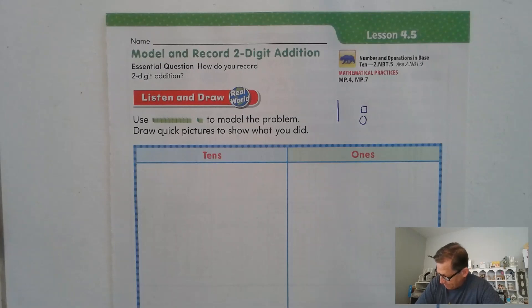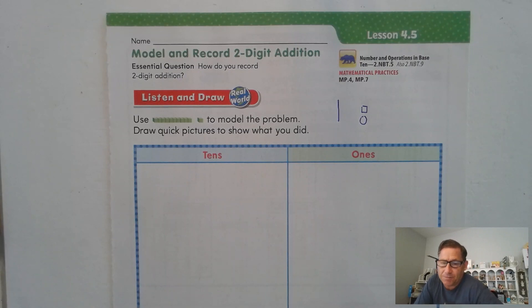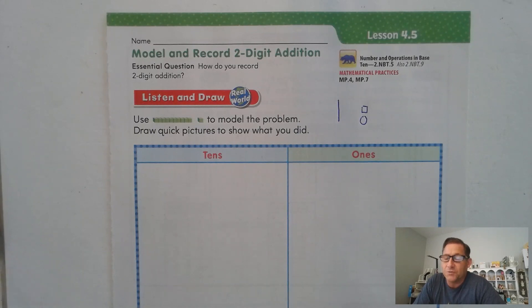Again, Mr. Riley's class collected 54 cans, and Ms. Bright's class collected 35 cans. So go ahead and draw a quick picture and add your problem to find the sum. While you're doing that, pause the video. And when you're done with your work, restart it and see if you came up with the same thing I did. Go ahead and get started.